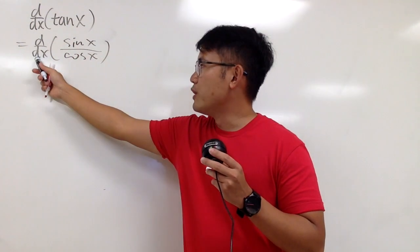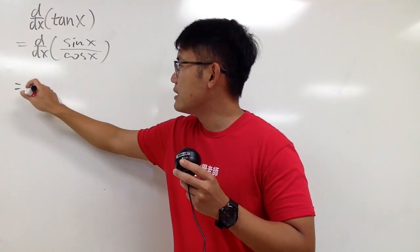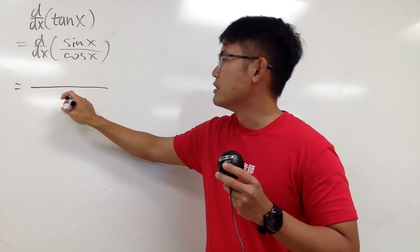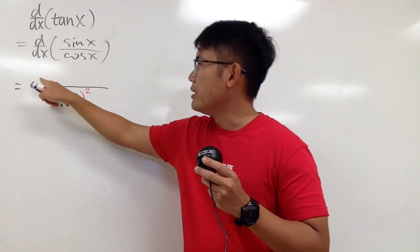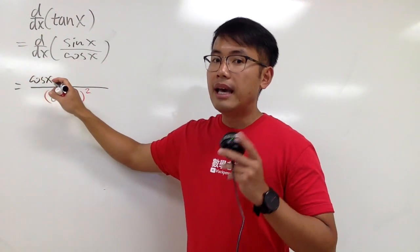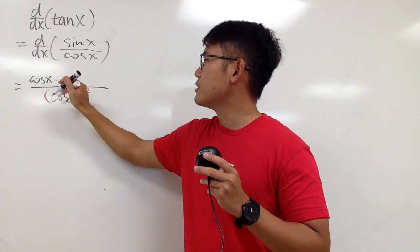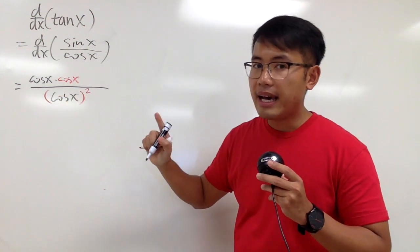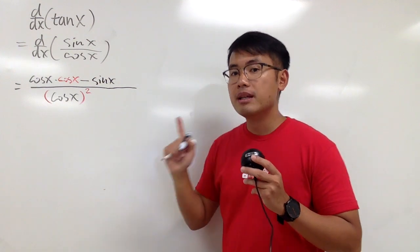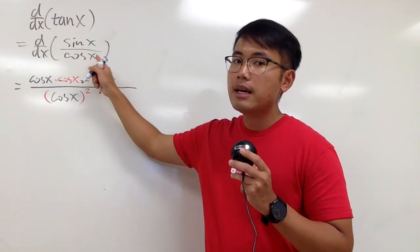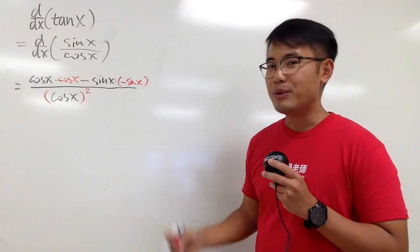Now we see that to differentiate a quotient of two functions, we use the quotient rule. The quotient rule says I'm going to square the denominator, so let me put down cosine x squared. Then I maintain the bottom function, cosine x, and multiply by the derivative of the top. The derivative of sine x is cosine x. And we have to minus the top function, sine x, multiplied by the derivative of the bottom function. The derivative of cosine x is negative sine x.